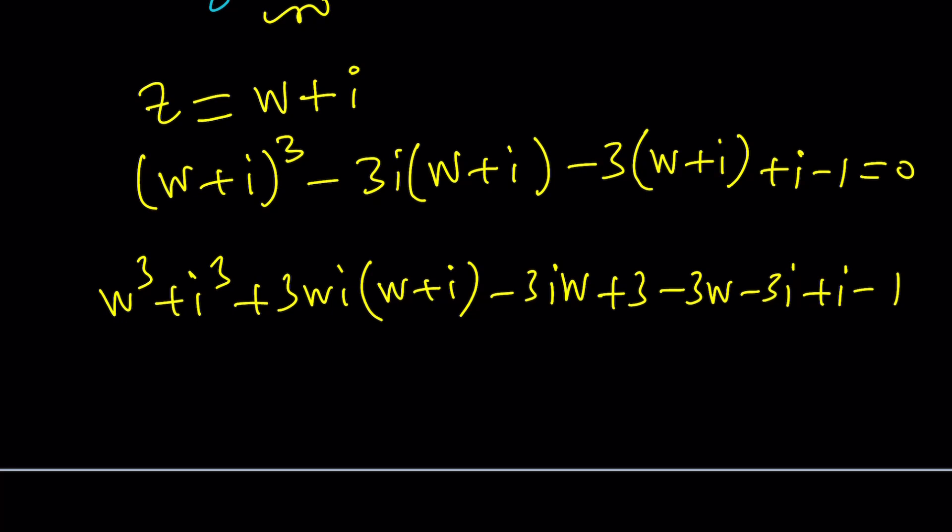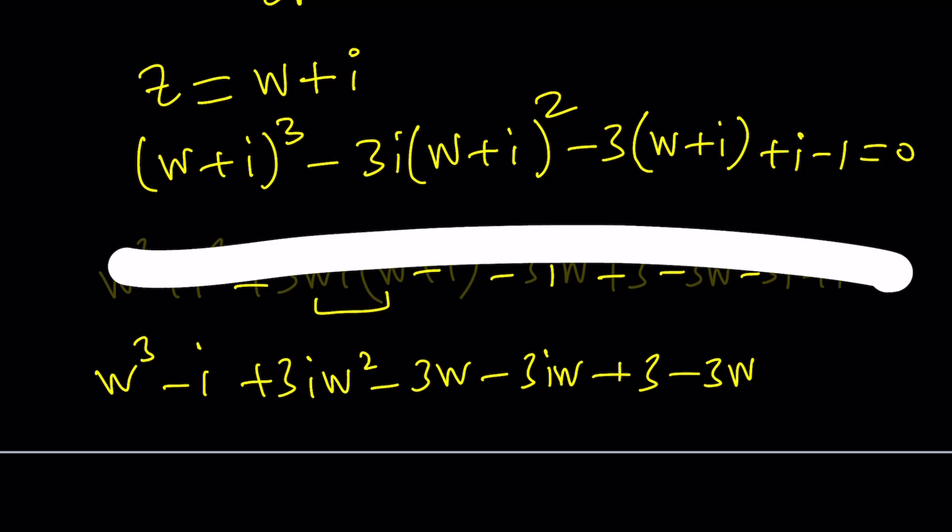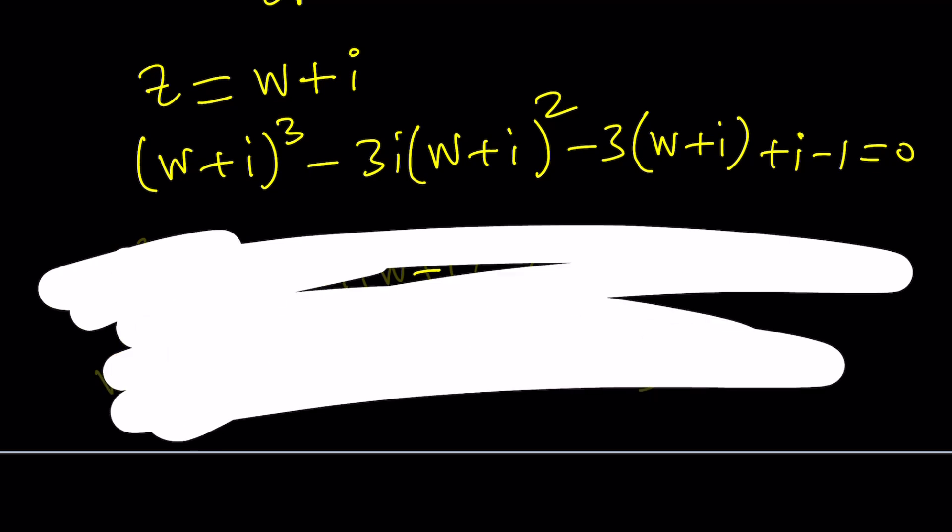So let's see if we can simplify this a little bit. Of course, we can distribute W cubed minus I plus 3IW squared minus 3W minus 3IW plus 3 minus 3W. And then we're supposed to... Okay. I think we messed up somewhere. Yes. We forgot to square this. There you go. That's why it doesn't disappear because we're supposed to get rid of W squared.